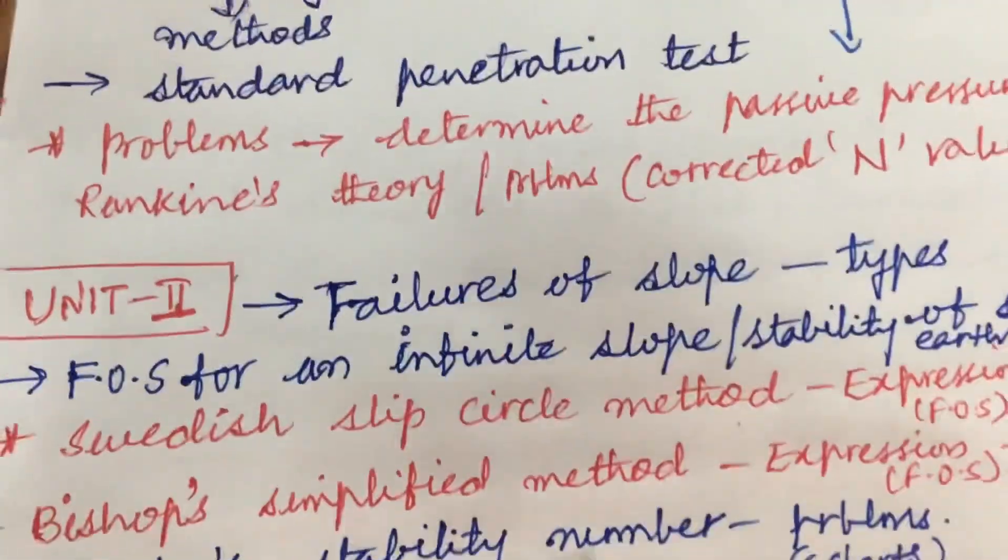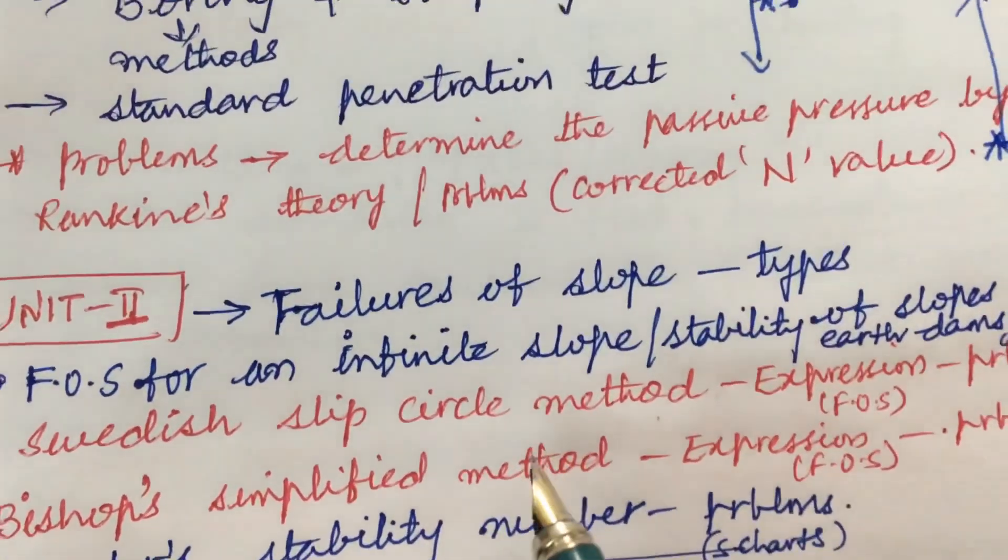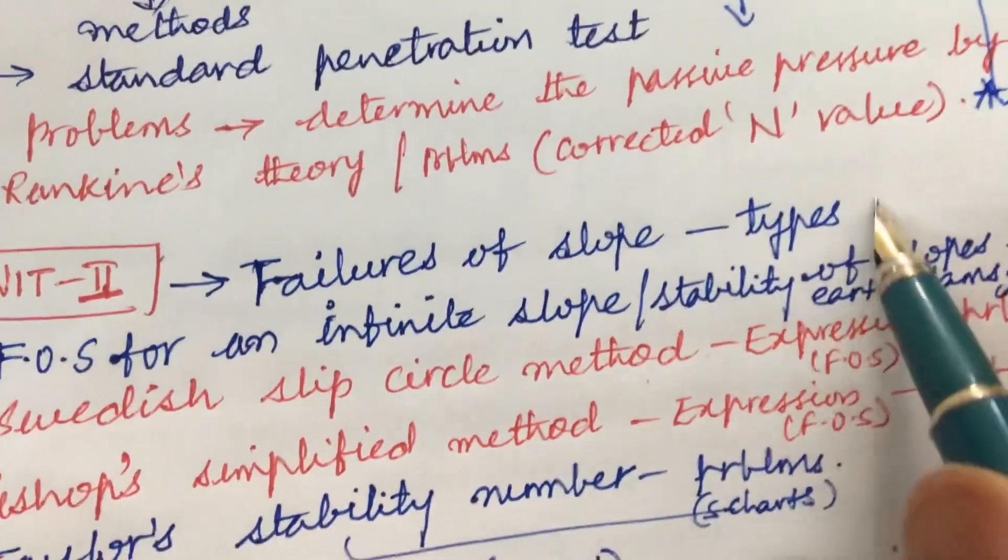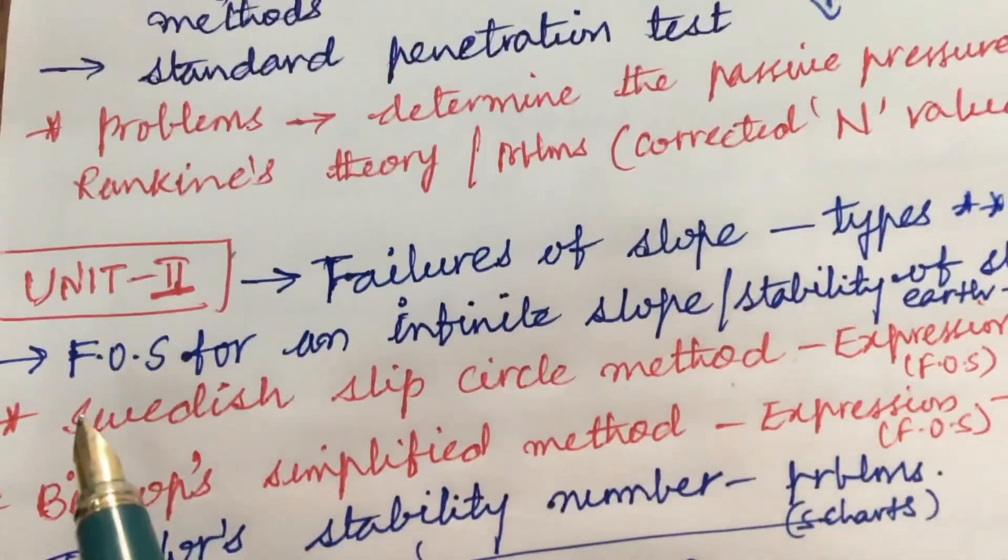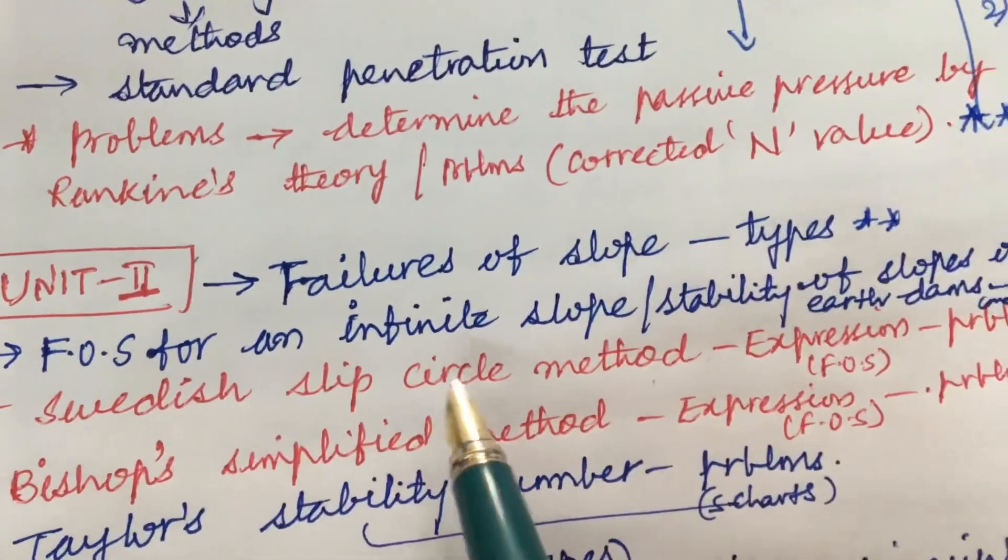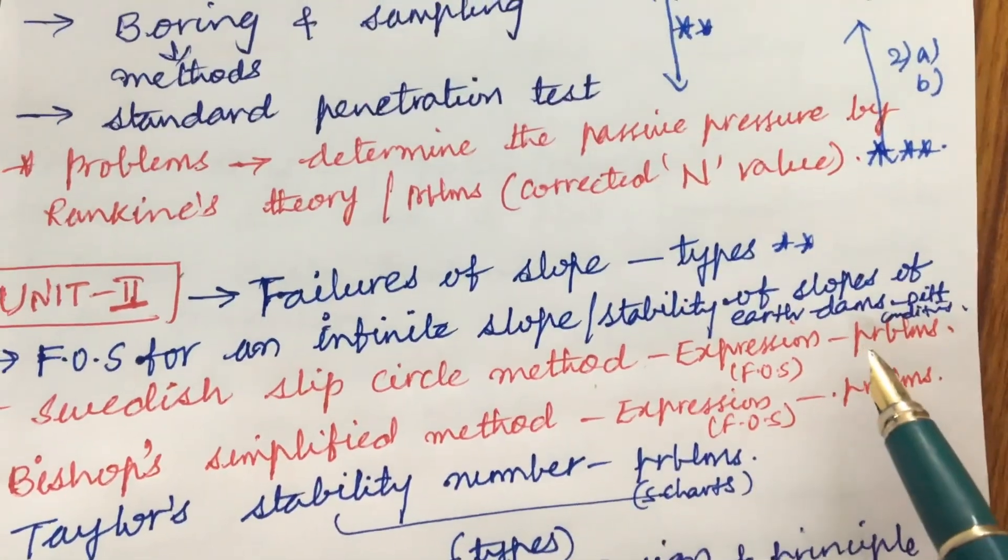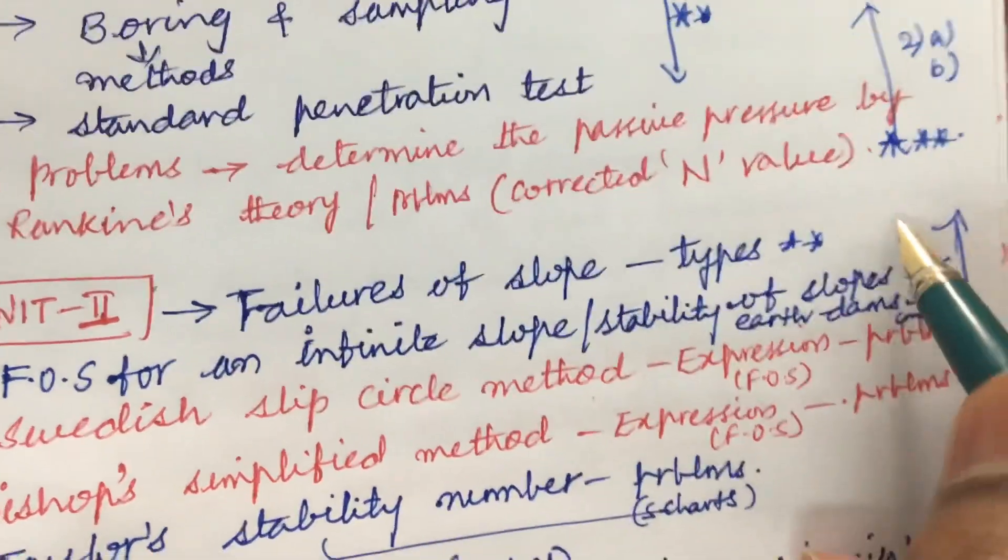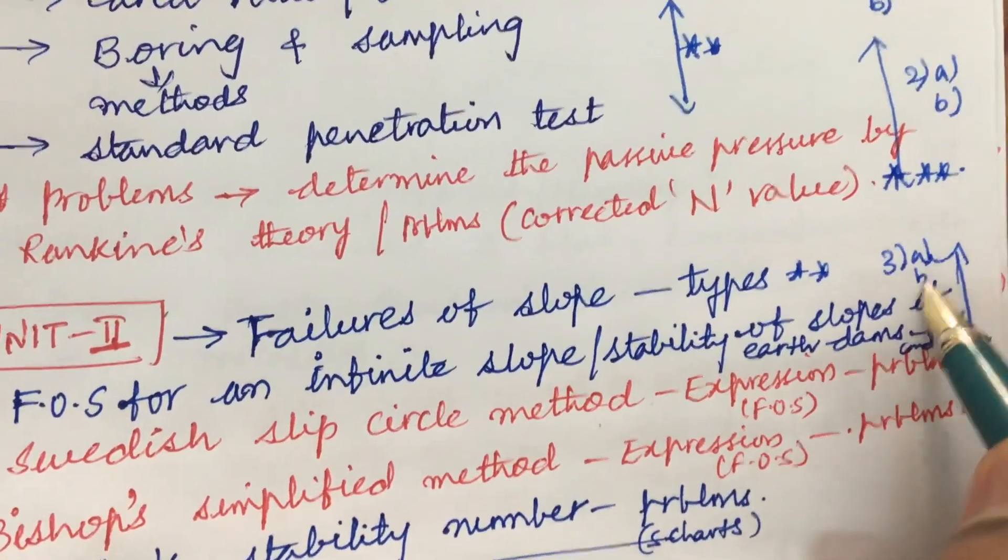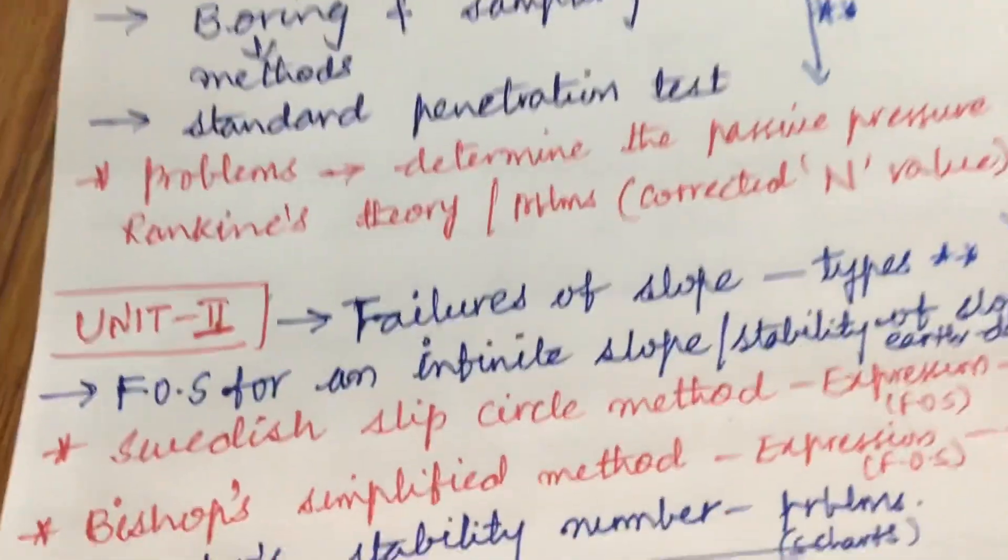Let us jump into unit 2. Unit 2 is all about the different types of failures of the slopes and its types, which is one of the very important questions, and later the factor of safety for an infinite slope as well as stability of slopes of earth dams and its different conditions. Based on these two you can expect 3A as well as 3B to be one of the gunshot questions.